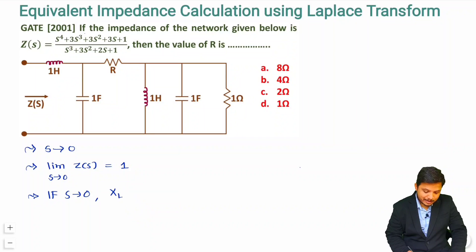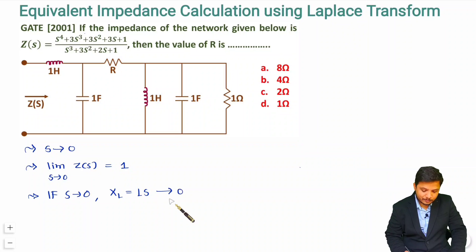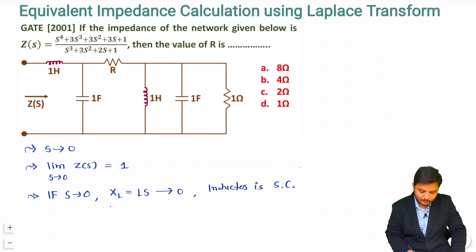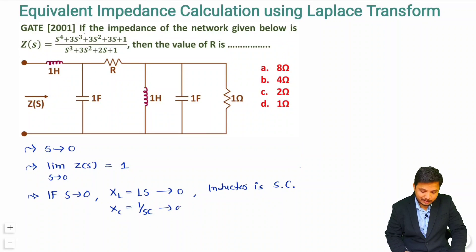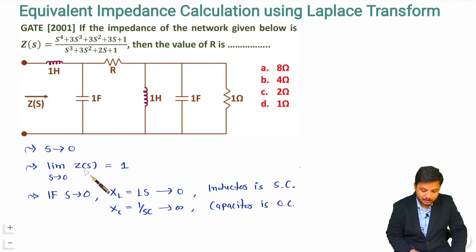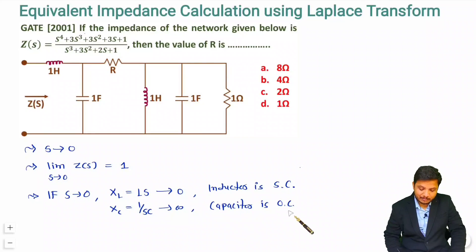The impedance of an inductor is L·s. If s tends to 0, then L·s also tends to 0, meaning the inductor is short-circuited. For a capacitor, the impedance is 1/(sC). If s tends to 0, then 1/s tends to infinity, meaning the capacitor acts as an open circuit. So when s tends to 0, inductors are short-circuited and capacitors are open-circuited.